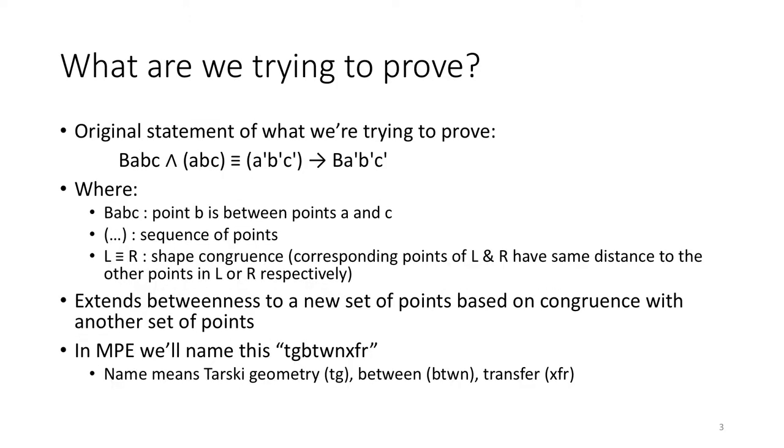So what are we trying to prove? The original statement of what we're trying to prove is B ABC and ABC congruent A' B' C' implies B A' B' C', where the expression B ABC simply means point B is between points A and C.